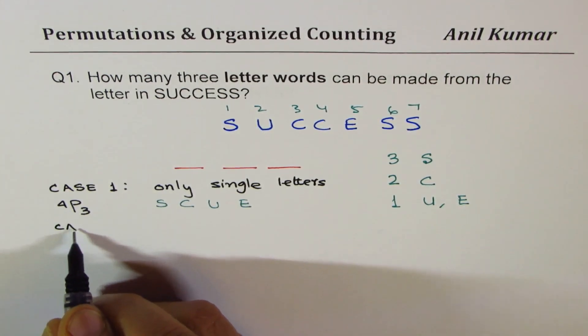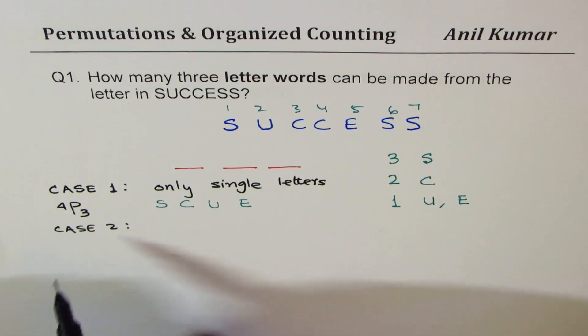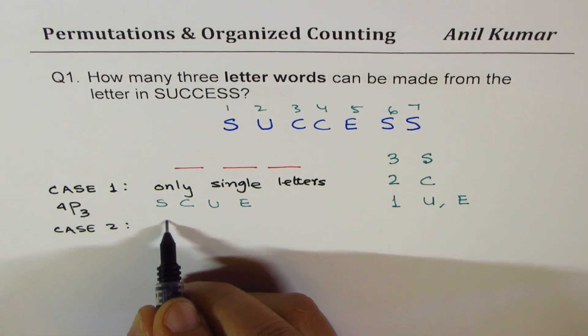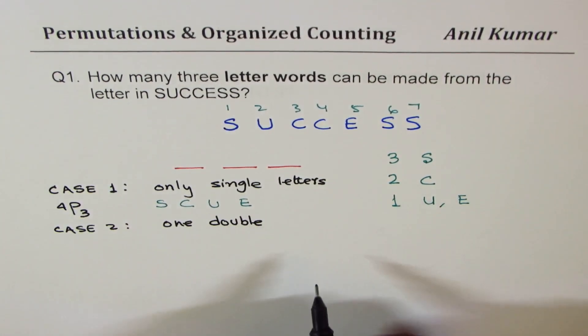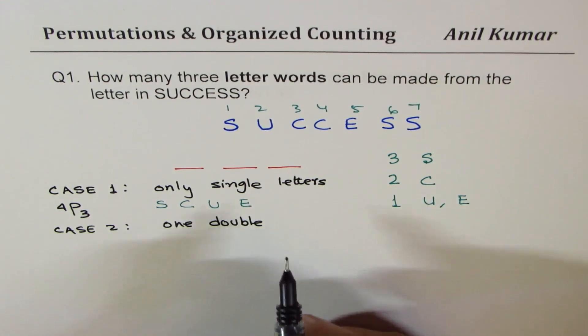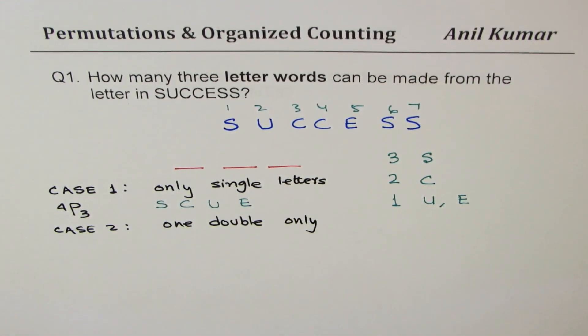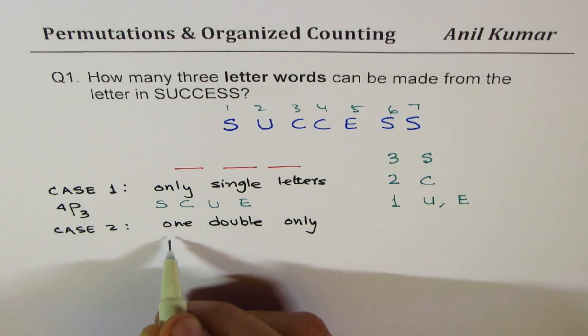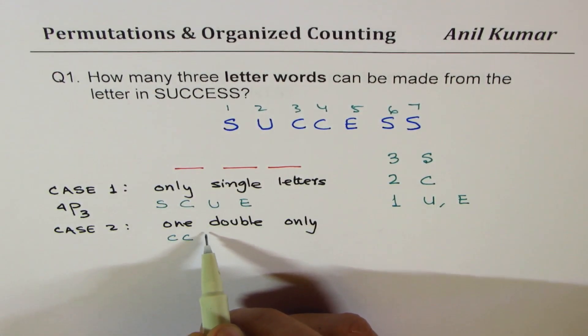Now let's do Case 2. In Case 2, we will take one double, that means one letter will be repeated, right? So only one double. In that case, we have two possibilities.